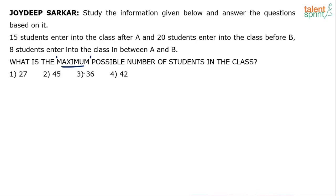The options are 27, 45, 36, and 42. It says 15 students enter into class after A and 20 enter into the class before B. There are two ways of looking at it — either A comes before B, or B comes before A.